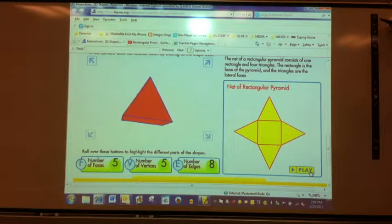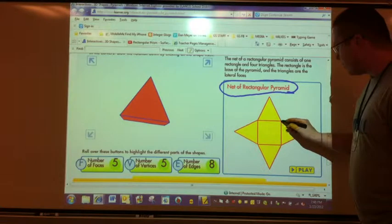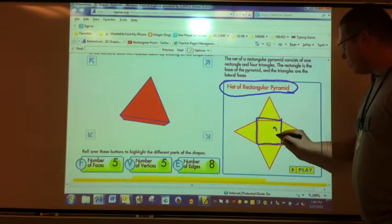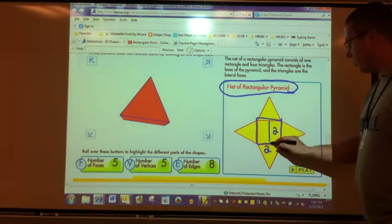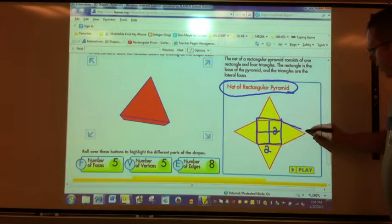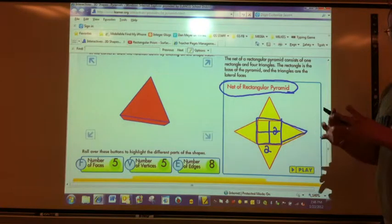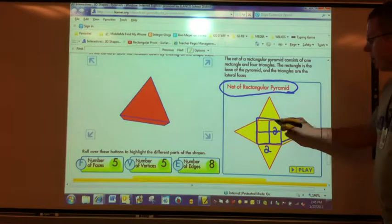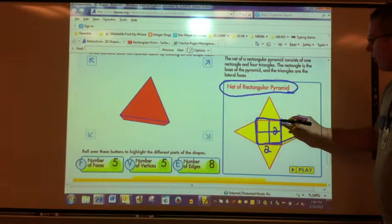What you are going to do for me when you make a net of a rectangular pyramid is this. Your base needs to be two by two. So it will look like this. Now, how long should these be? Well, long enough so that when you fold them up, they all four join together at a pinnacle at the very top.